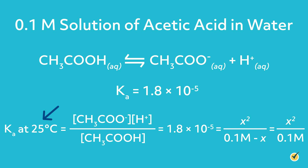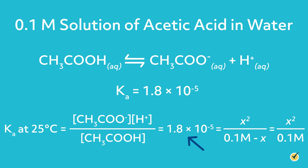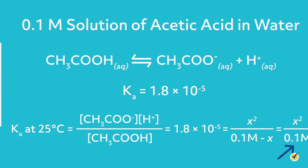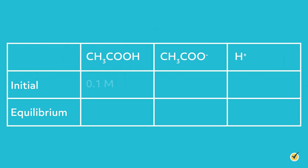Ka at 25 degrees Celsius equals the concentration of acetate ions times the concentration of hydrogen ions, divided by the concentration of acetic acid molecules, which equals 1.8 times 10 to the negative 5. In our case, this equals x squared divided by 0.1 molar minus x. We know the initial concentration of acetic acid is 0.1 molar, and at the start there is no concentration of the two ions. However, these concentrations will change as the system reaches equilibrium. The acetic acid concentration will drop by x, and the concentrations of the two ions will increase by x.